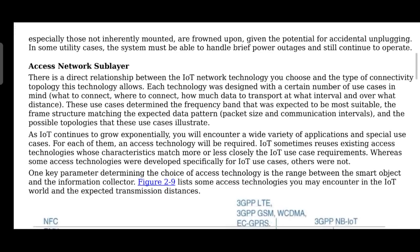In the access network sublayer, there is a direct relationship between the IoT network technology you choose and the type of connectivity topology. Each technology was designed with certain use cases in mind — what to connect, where to connect, how much data to transport, at what interval, and over what distance. These use cases determine the frequency band, the frame structure matching the expected data pattern, and the possible topologies.